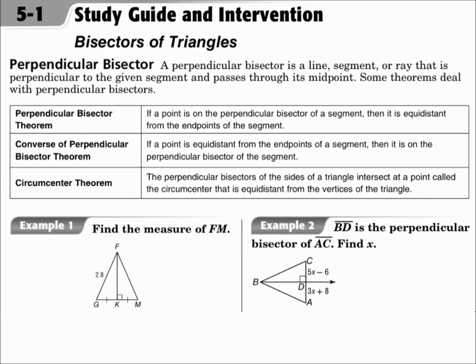This is lesson 5.1, Bisectors of Triangles. Your objectives are to identify and use perpendicular bisectors in triangles, and to identify and use angle bisectors in triangles.